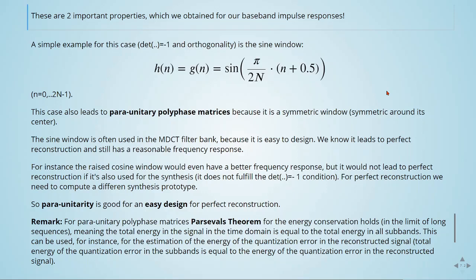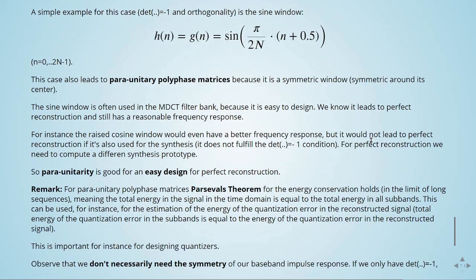For instance, the raised cosine window would even have a better frequency response, but it would not lead to perfect reconstruction if it is also used for the synthesis. It does not fulfill the condition that the determinant should be equal to minus 1. For perfect reconstruction, we need to compute a different synthesis prototype. So para-unitary is good for an easy design for perfect reconstruction.